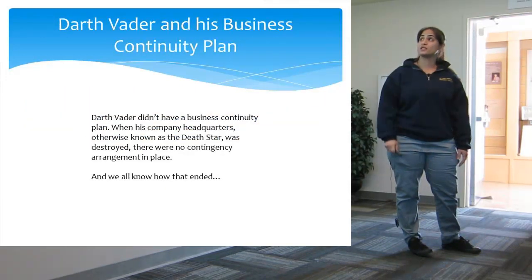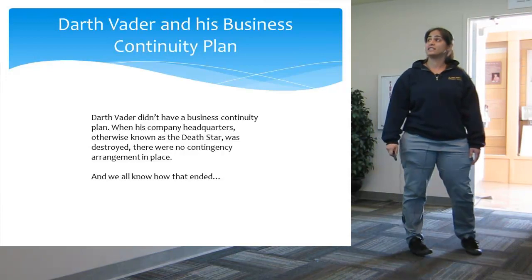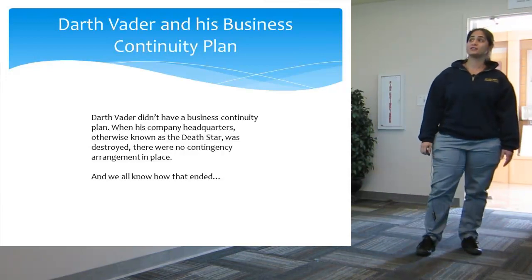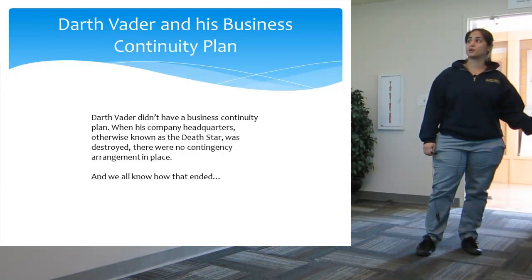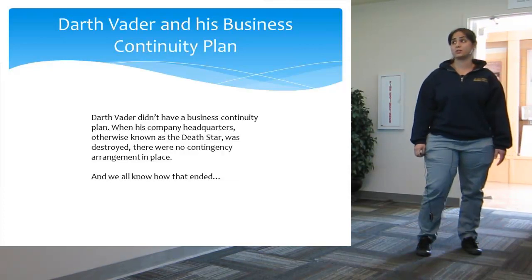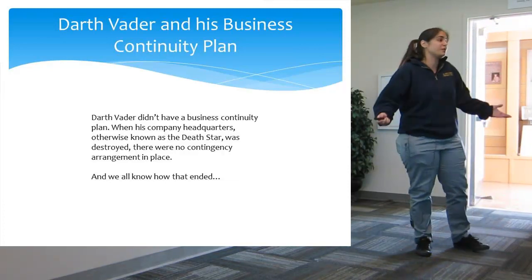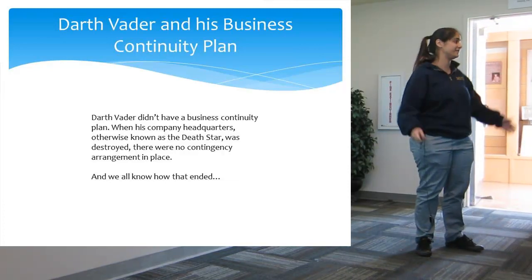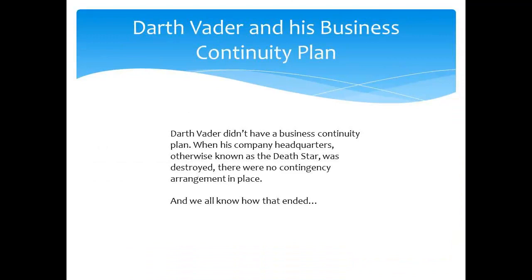On a closing note, Darth Vader didn't have a business continuity plan. So when his company headquarters, also known as the Death Star, was destroyed, there was no contingency agreement in place — and we all know how that ended. Thank you.